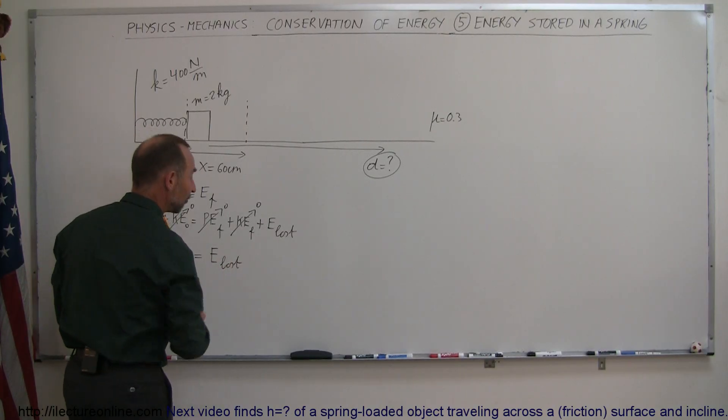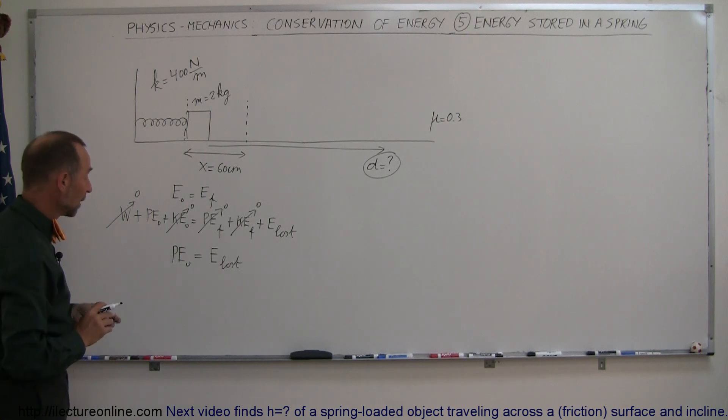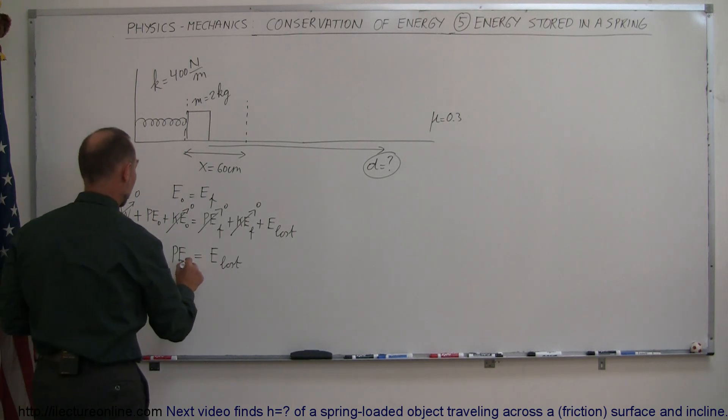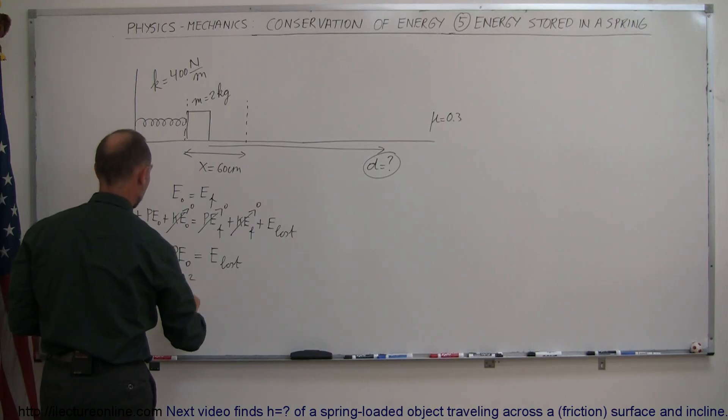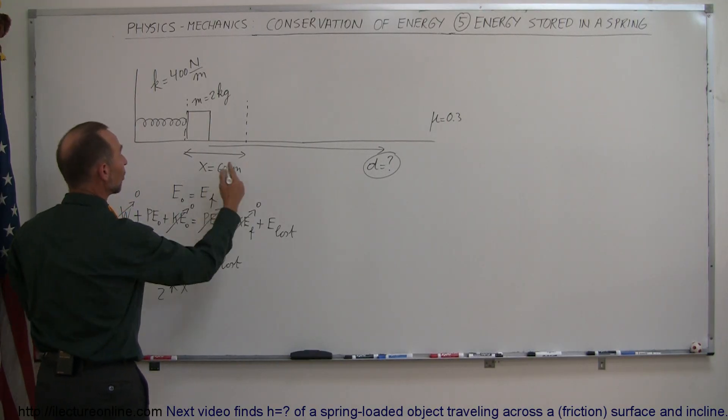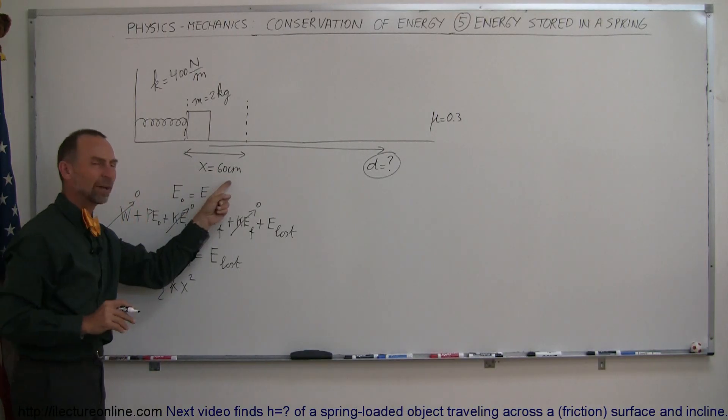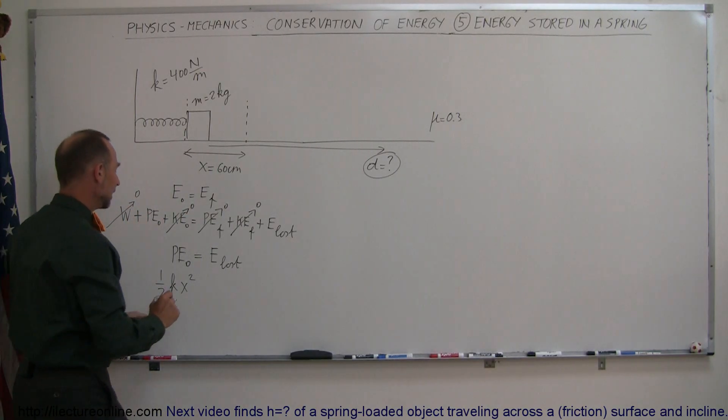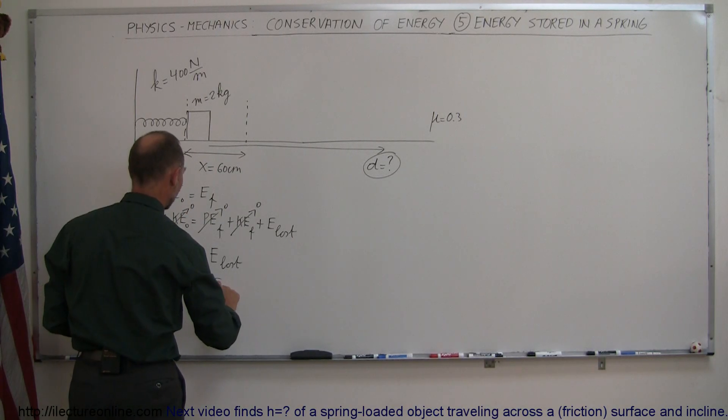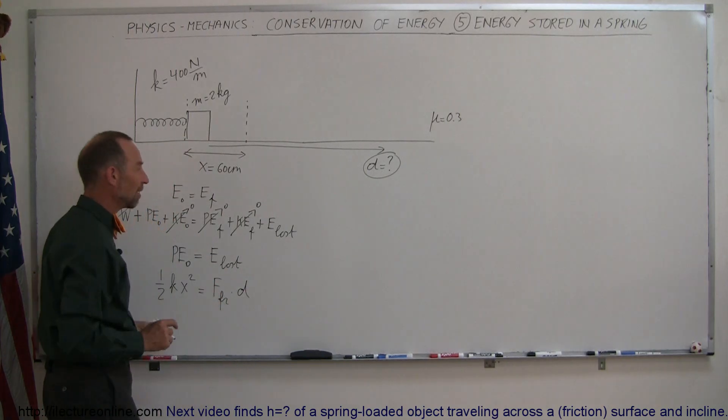And now we just have to figure out what those things are. For potential energy initial, the energy stored in the spring is one-half k x squared, k being the spring constant and x being the distance that the spring was compressed—we'll have to convert that to meters. The energy loss is going to be equal to the friction force that we have to overcome times the distance that we have to travel. And that's what we're looking for—that's the variable we're going to be solving.